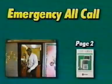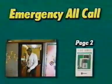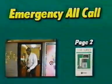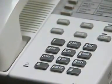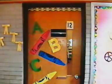Let's start with generating an emergency all call to all speaker locations. Open to page two of the operating instructions. Note that emergency messages override all activities throughout the system. Here's a demonstration. To generate an emergency all call, lift the handset and press pound, pound, zero. Issue the message, then hang up.